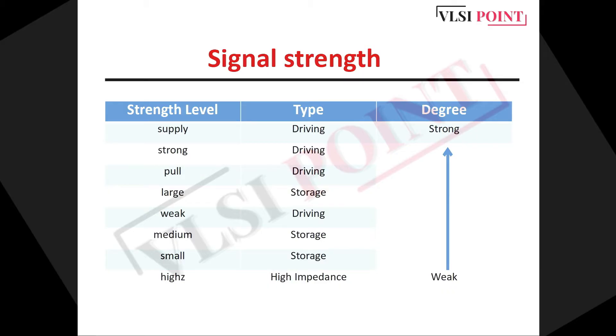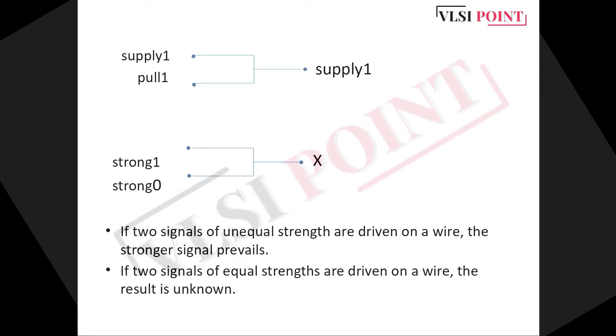Now the twist is that when we apply two different strength level signals as an input to the wire, then these higher strength level signal will be reflected at the output. And when we apply the same strength level signals as an input to the wire, in that condition, the output will be unknown. So you can understand from this figure. In first example, I have given two inputs, supply1 and pull1. And you can see at output, the supply1 has reflected. And the reason is supply1 has a higher strength level as compared to the pull1. In second example, I have given two inputs, strong1 and strong0. Since both the signals are in same strength level, so in output, there is unknown value. So yes, I was talking about these two conditions.